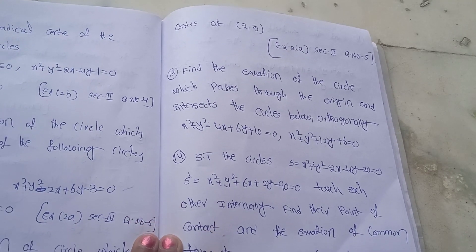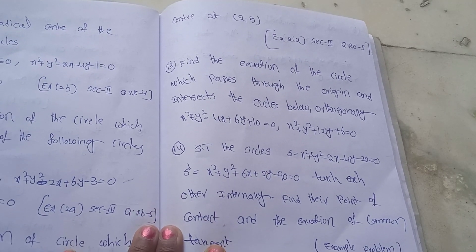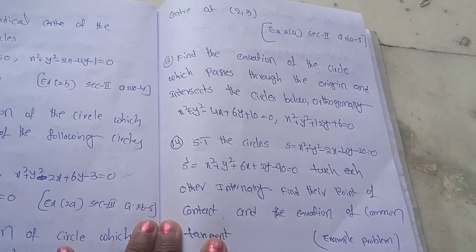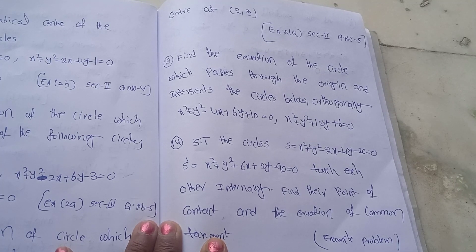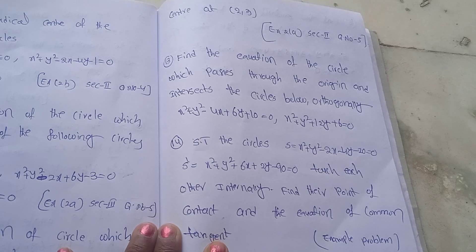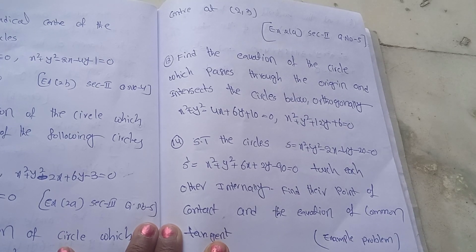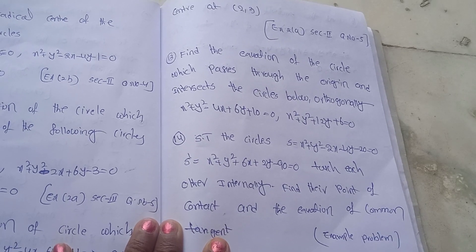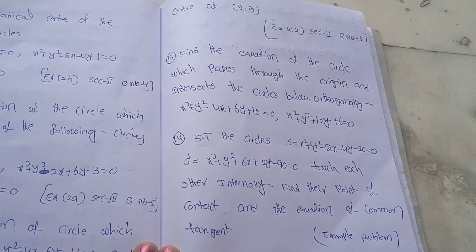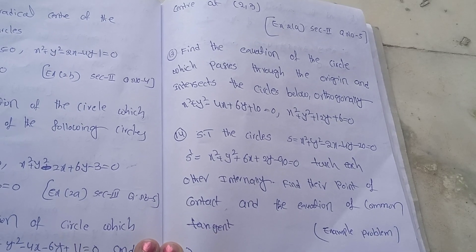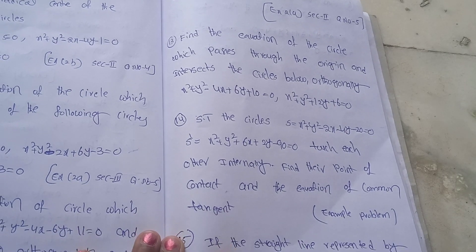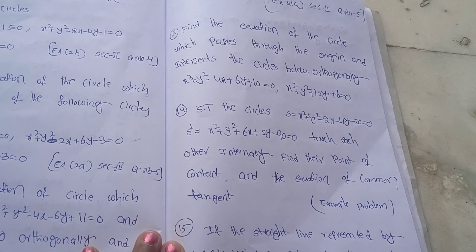Next, show that the circles S: x² + y² − 2x − 4y − 20 = 0 and S': x² + y² + 6x + 2y − 90 = 0 touch each other internally, find their point of contact, and find the equation of the common tangent. This is an example problem.